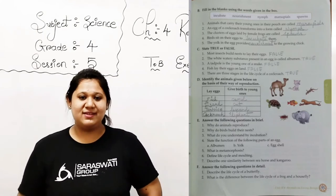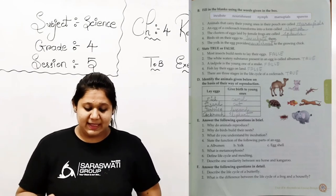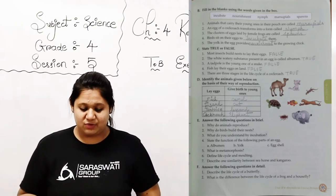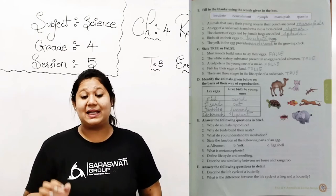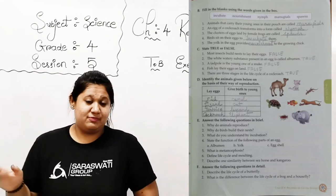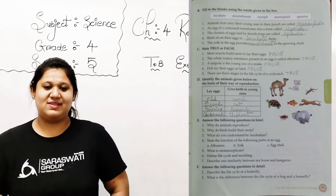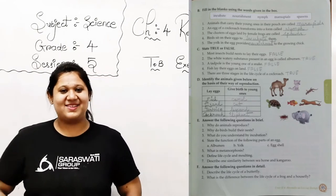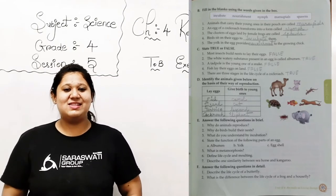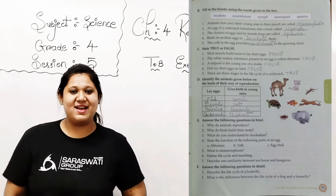Now number 3: the clusters of eggs laid by the female frogs are called. So easy. Spawns. Yes, that is the correct answer. Spawns. S-P-A-W-N-S. Spawns. Clear?